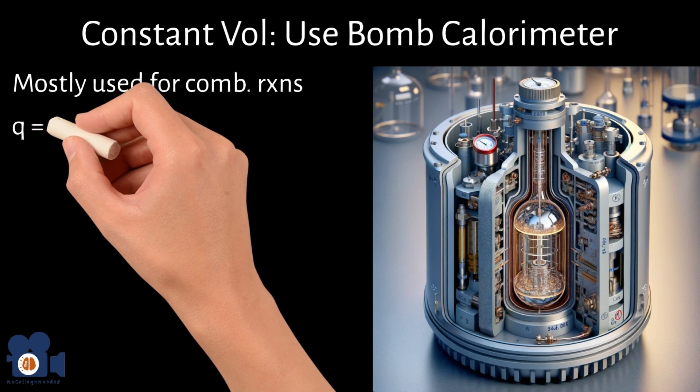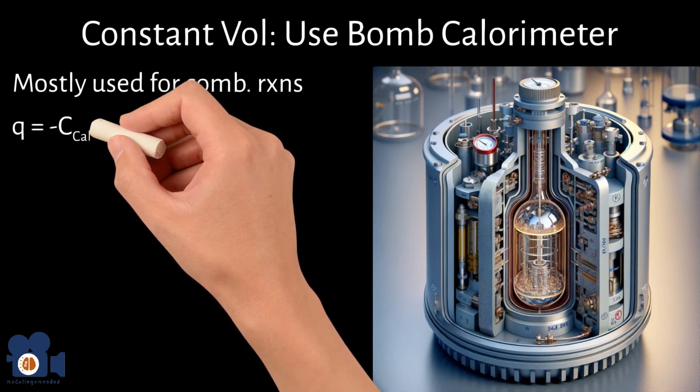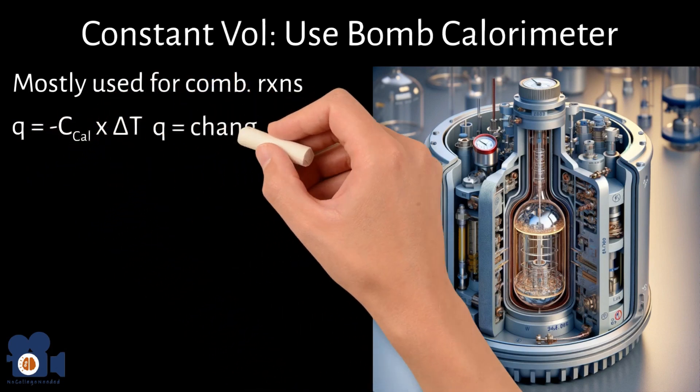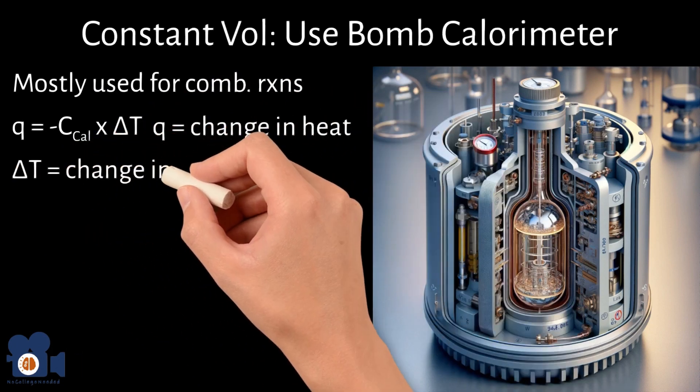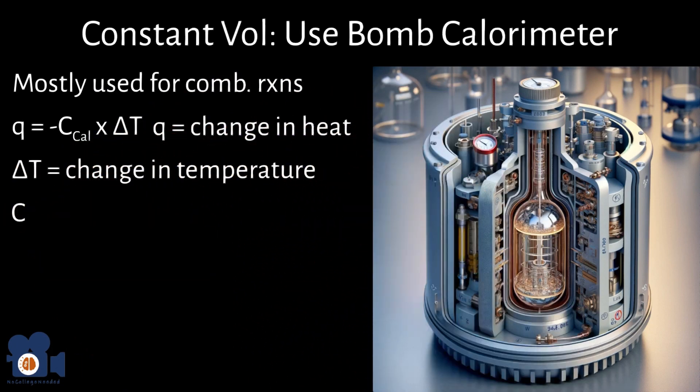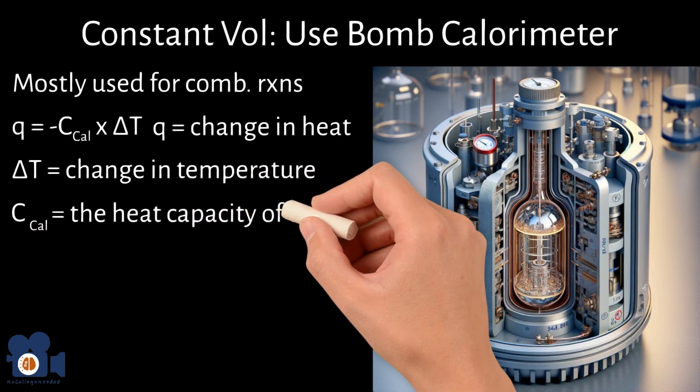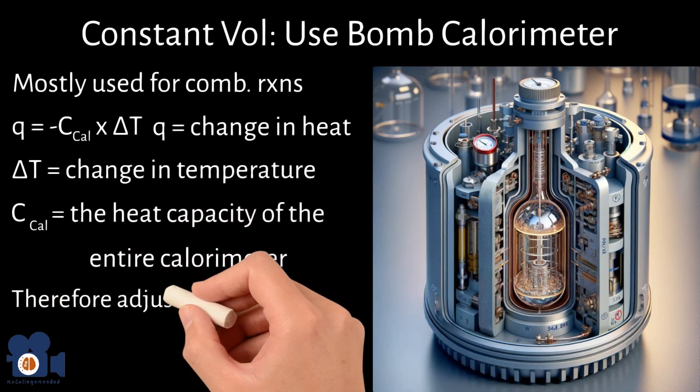The formula for bomb calorimetry is Q equals negative Ccal times delta T, where Q equals the change in heat, delta T equals the change in temperature, and Ccal is the heat capacity of the entire calorimeter, therefore adjusting for the mass.